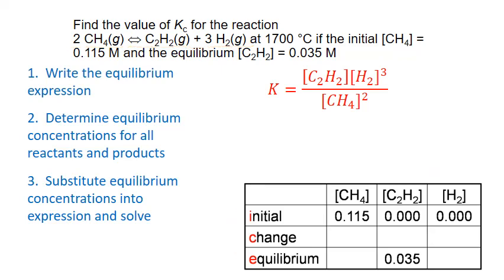Next we fill in the change row, indicating direction and amount. For our products, we start at zero and must increase — we can't go to negative concentrations — so both ethine and hydrogen are plus values. If we increase our products, that means we decrease the reactants, so methane is negative. For the amount of change, we use x scaled by the coefficients: minus 2x for methane, plus 3x for hydrogen, and plus x for ethine.